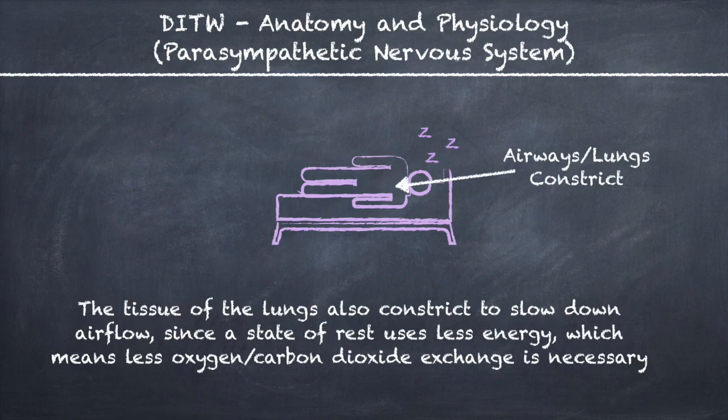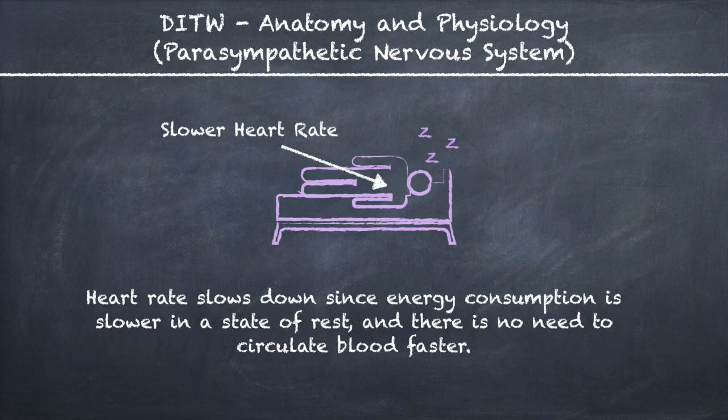The tissue of the lungs also constricts to slow down airflow since a state of rest uses less energy, which means less oxygen-carbon dioxide exchange is necessary. Heart rate slows down since energy consumption is slower in a state of rest and there is no need to circulate blood faster.